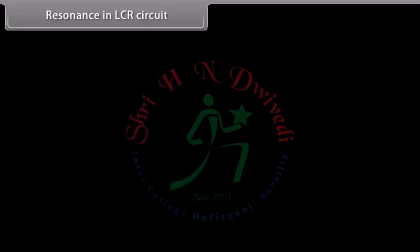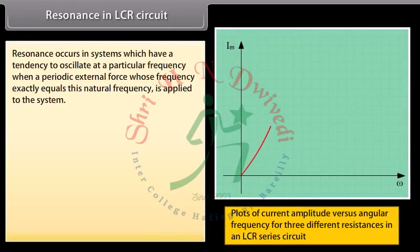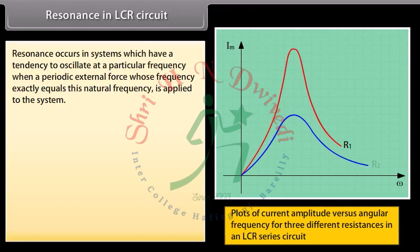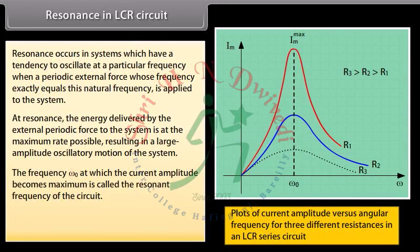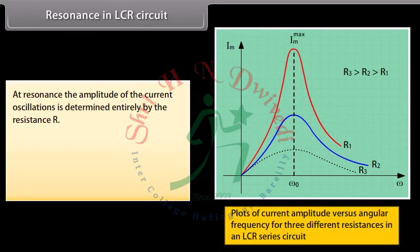Resonance occurs in systems that have a tendency to oscillate at a particular frequency when a periodic external force whose frequency exactly equals the natural frequency is applied. At resonance, the energy delivered by the external periodic force to the system is at the maximum rate possible, resulting in large amplitude oscillatory motion. The resonant frequency ω₀ at which current amplitude is maximum is ω₀ = 1 / √(LC). At resonance, the amplitude of current oscillations is determined entirely by resistance R.